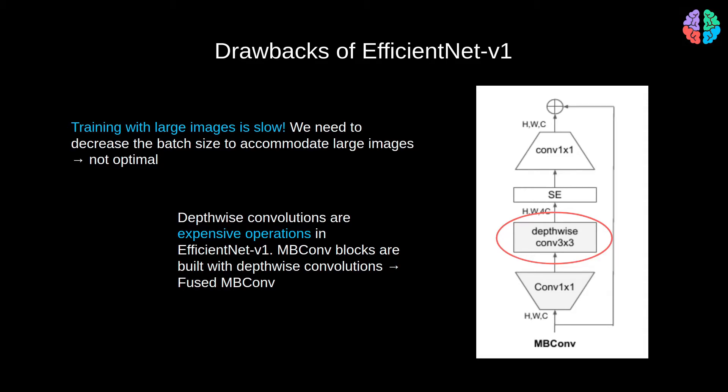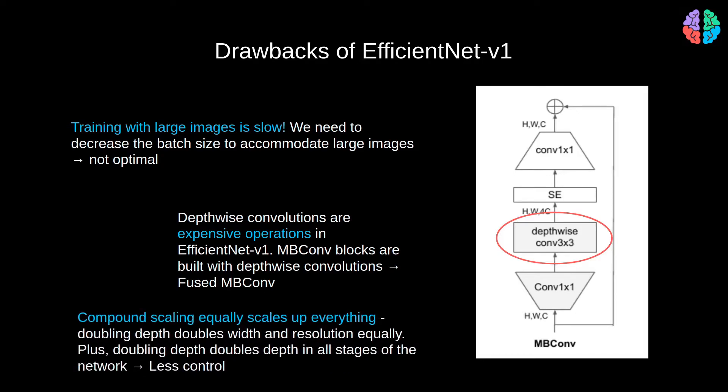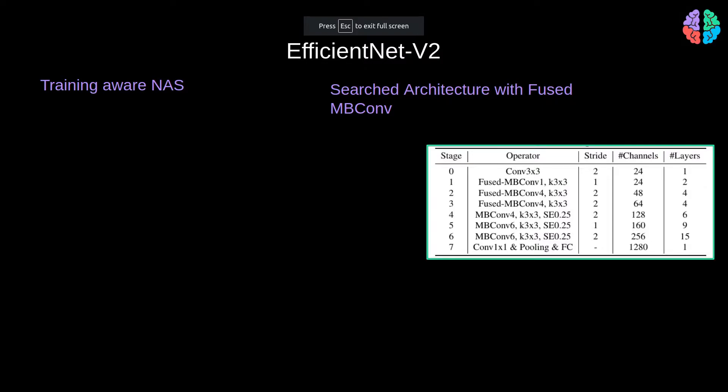The third and major limitation of EfficientNet V1 is that compound scaling scales depth, width and resolution equally. If we double the depth, then we also end up doubling the width and resolution. Plus, the doubling happens at all stages or blocks of the network. With all that said, let's find out how EfficientNet version 2 addresses all these drawbacks.